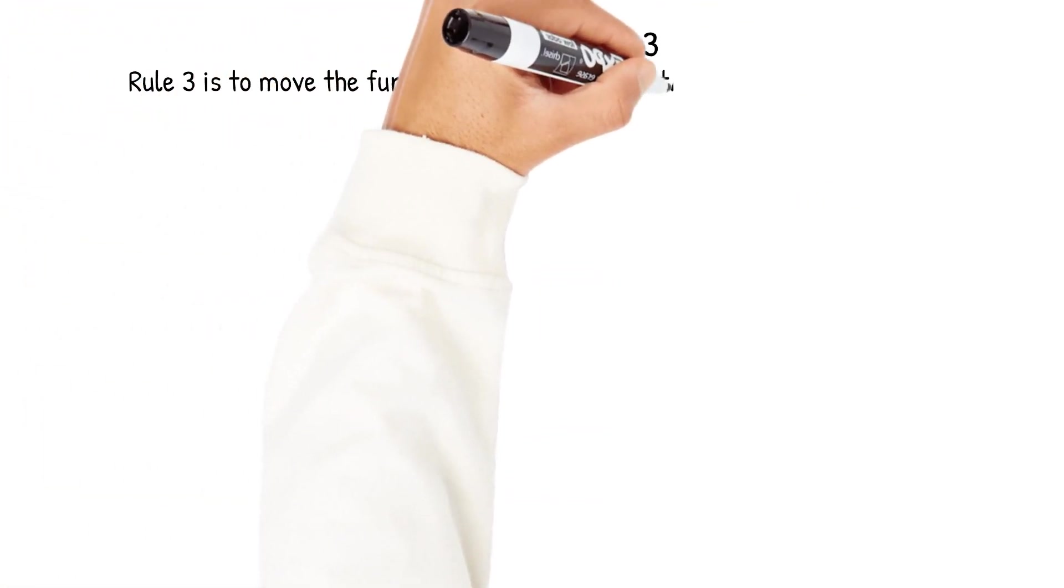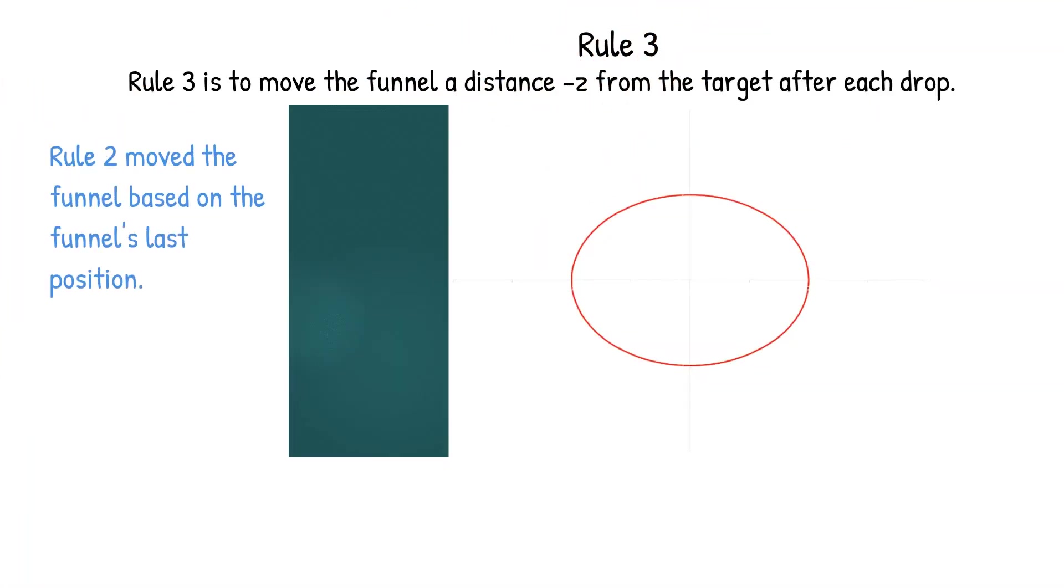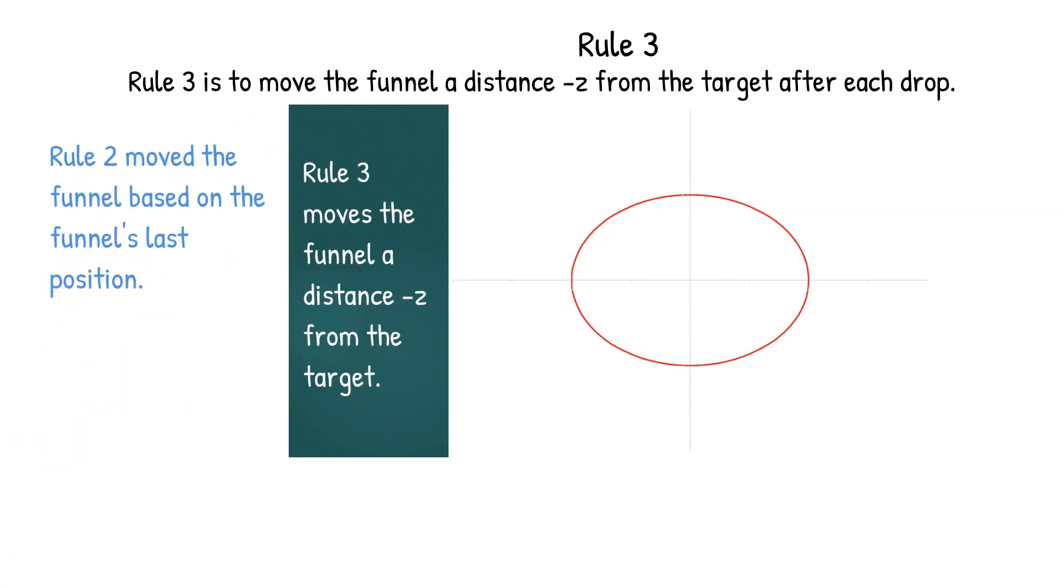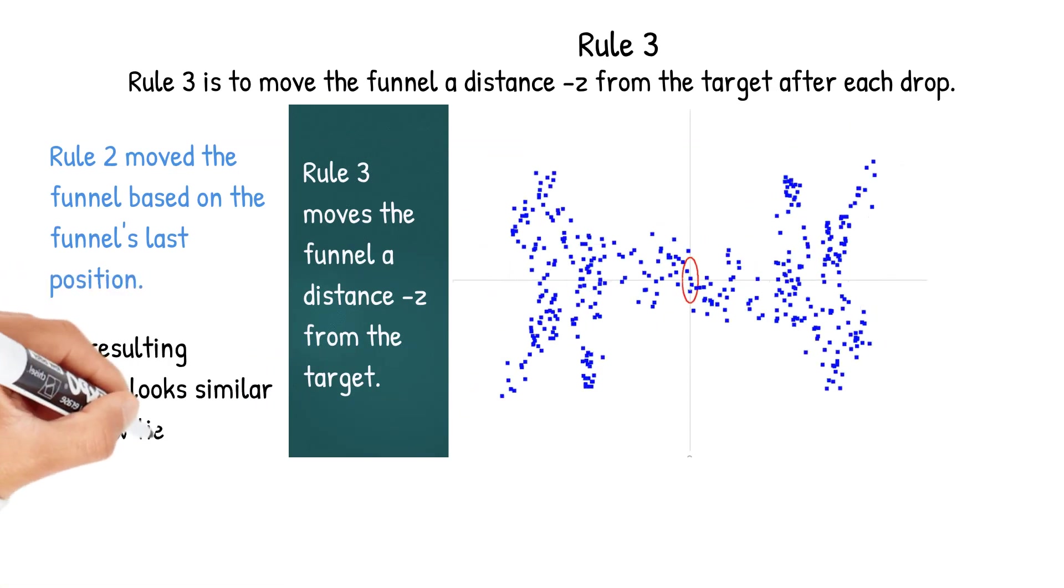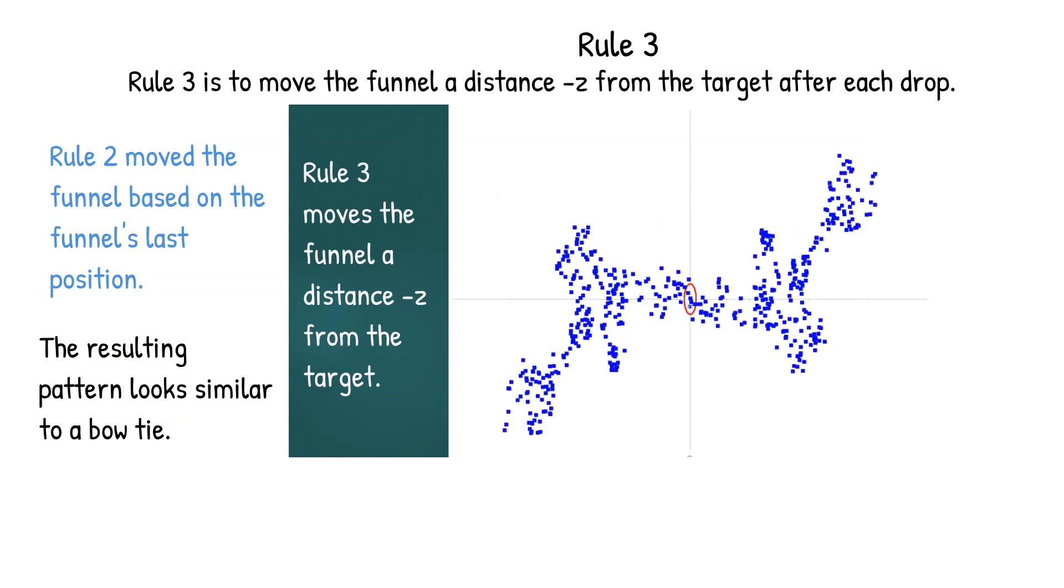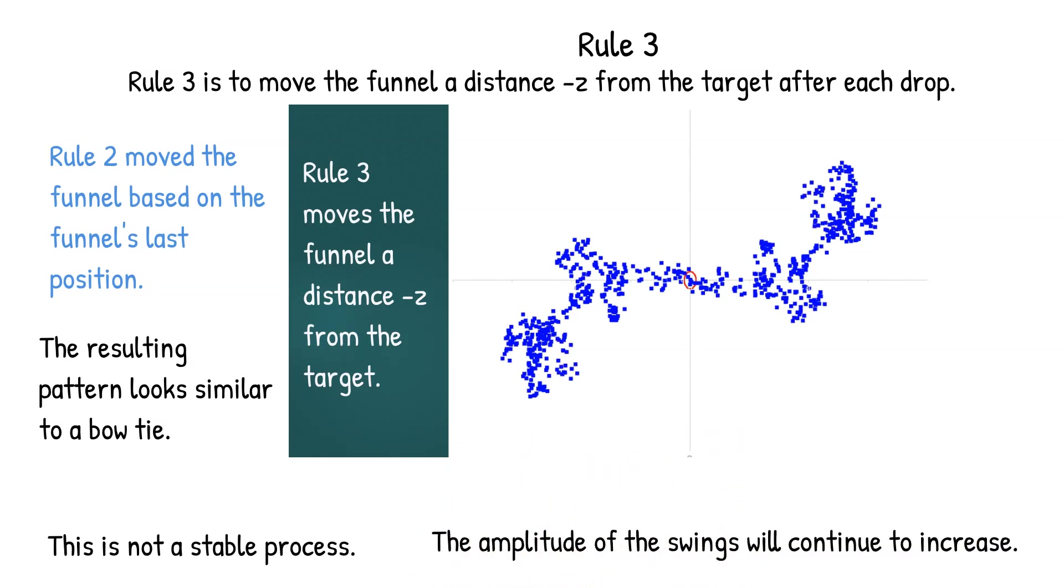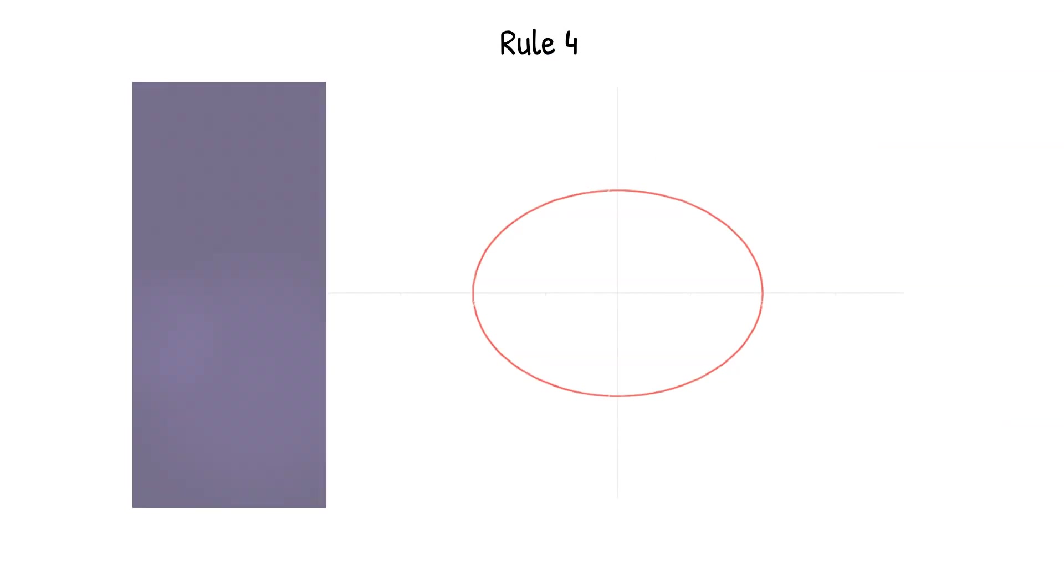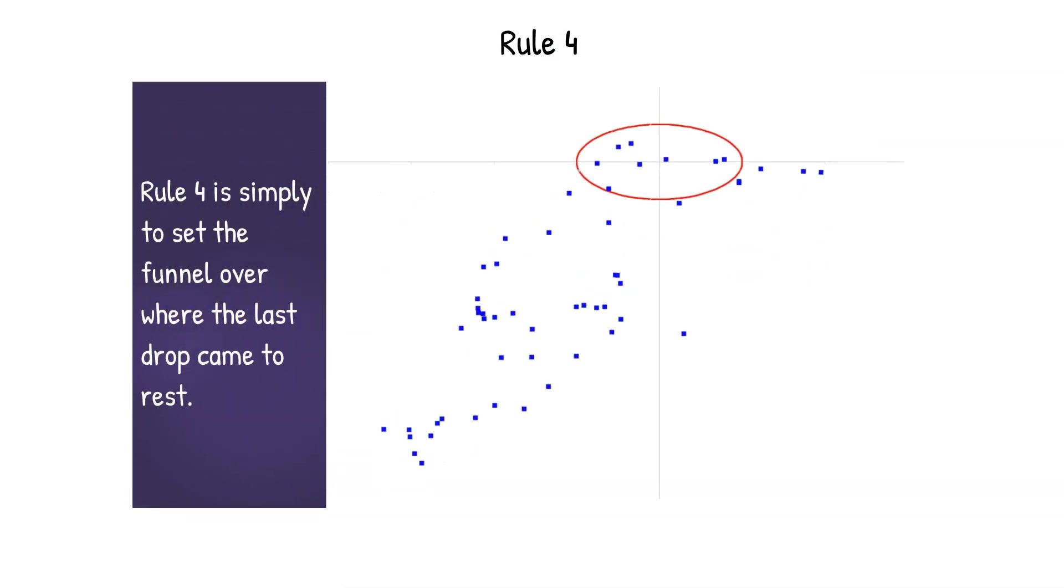Now let's move on to rule three and here you're going to move the funnel a distance minus z from the target after each drop. Before we moved the funnel from its last position in rule two, now we're actually going to move it from the target. And here you can see the Excel simulation and you can see how far away it gets from the target very quickly. The results look like a bow tie. This process is not stable. It just keeps getting bigger and bigger that bow tie. The swings will continue to increase.